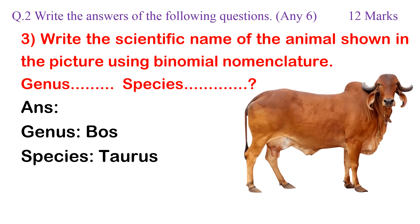Question 3: Write the scientific name of the animal shown in the picture using binomial nomenclature. Genus and Species. Answer: Genus — Bos; Species — Taurus.